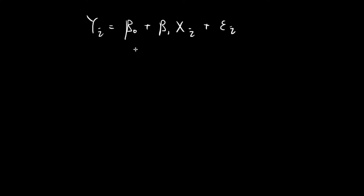We are now assuming that our data is related to each other by this formula. But this only gives us the form of the relationship between the data — it doesn't tell us what the constants beta0 and beta1 actually are.